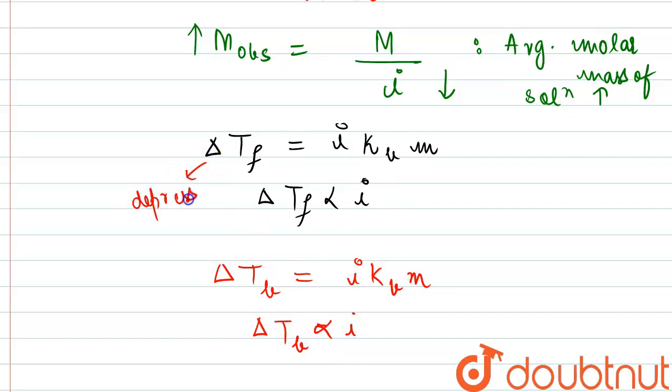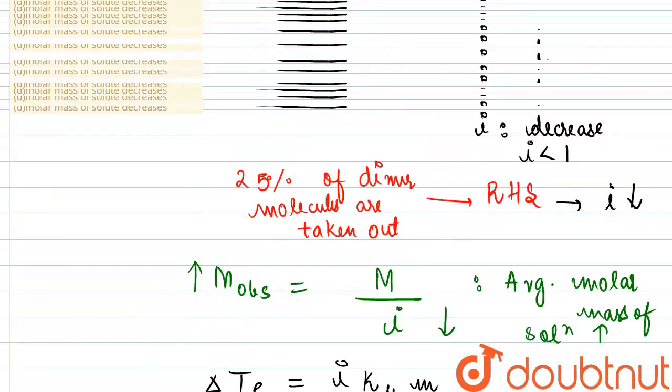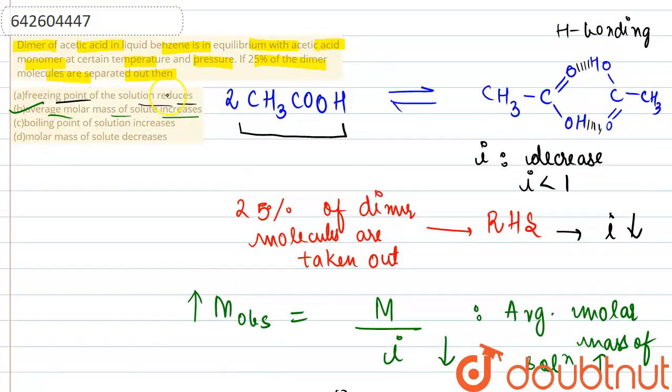But we know that these are the changes, this is not the actual freezing point or the actual boiling point. These are the changes that are decreasing with the decreasing value of i. So we cannot say that freezing point of the solution is reducing; rather, depression is reducing.